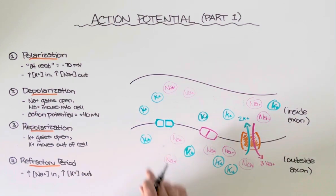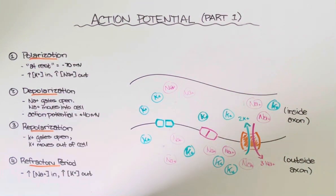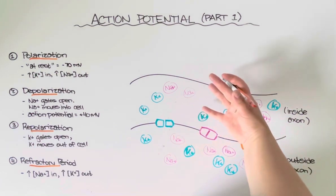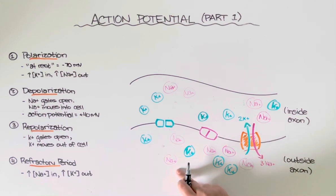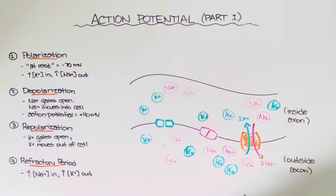So even though the cell is now negative, kind of like it was during polarization, it actually can't respond to any kind of signal because if this gate was to open, sodium really wouldn't flow in. I have maybe one sodium that can move in and then it's already at equilibrium. So this is known as the refractory period. During this point in time, the cell cannot respond to another stimulus if it were to be received.